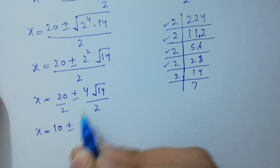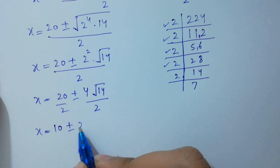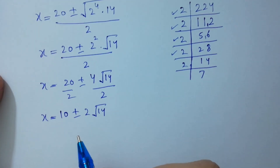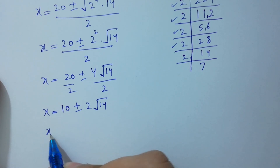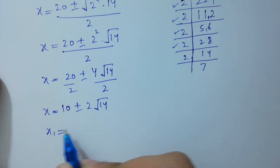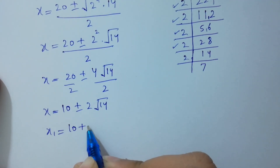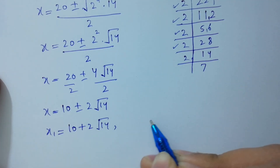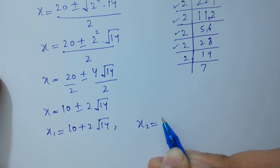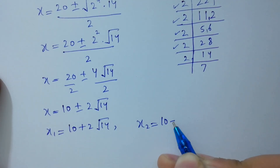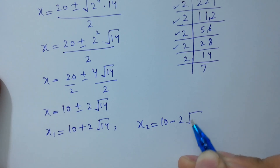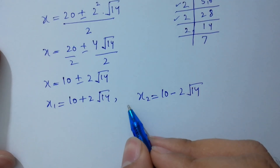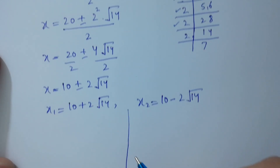Simplifying: 20 over 2 is 10, and 4 square root of 14 over 2 is 2 square root of 14. So x1 equals 10 plus 2 square root of 14, and x2 equals 10 minus 2 square root of 14.